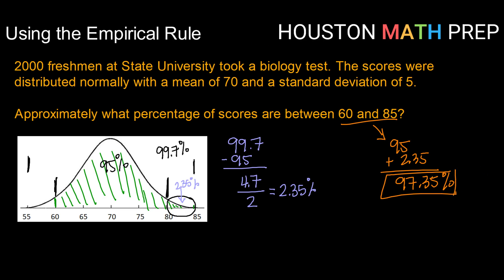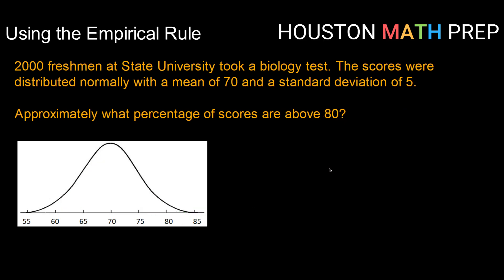All right, one more about State University. Approximately what percentage of scores are above 80? So above 80, if we shaded that on our picture, that would be right here. And remember, one of the things we talked about with normal curves is that they are asymptotic, meaning they don't ever actually stop.